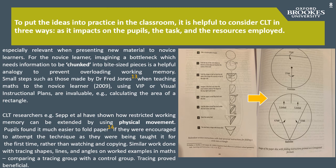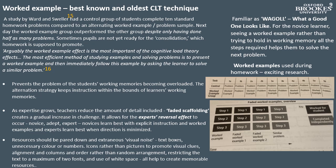Physical movements, such as counting on fingers, help to retain information rather than relying solely on working memory. Tracing shapes, lines and angles on worked examples in maths also proved more helpful to pupils than the control group who did not trace. Possibly the best known and oldest CLT technique shown to reduce load on working memory is that of the worked example. Teachers are familiar with the idea of a model — what a good one looks like — and for the novice learner, seeing a worked example rather than trying to hold all steps in working memory helps them to solve the next problem.